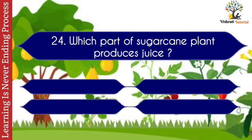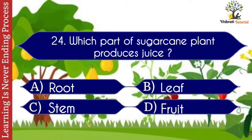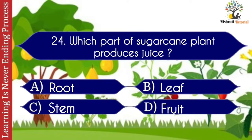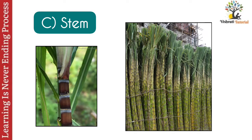Question number twenty-four: which part of a sugarcane plant produces juice? Options: A. Root, B. Leaf, C. Stem, D. Fruit. The correct answer is C. Stem. Stem is the part of a sugarcane plant that produces juice.